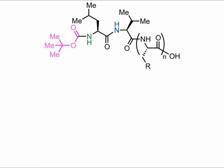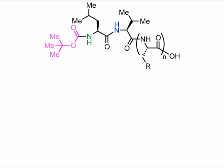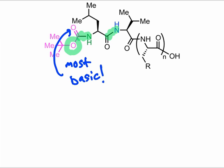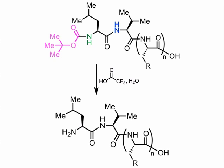At the end of the sequence, we need a way to free up the blocked amino terminus. This is conceptually somewhat difficult because the Boc–nitrogen bond that we need to break looks a lot like an amide bond. Luckily, the presence of an additional oxygen atom makes the Boc carbonyl group the most basic carbonyl in the polypeptide. Treatment of the Boc-protected polypeptide with a solution of trifluoroacetic acid in water leads to selective cleavage of the nitrogen–Boc bond through hydrolysis, leaving behind our desired polypeptide.